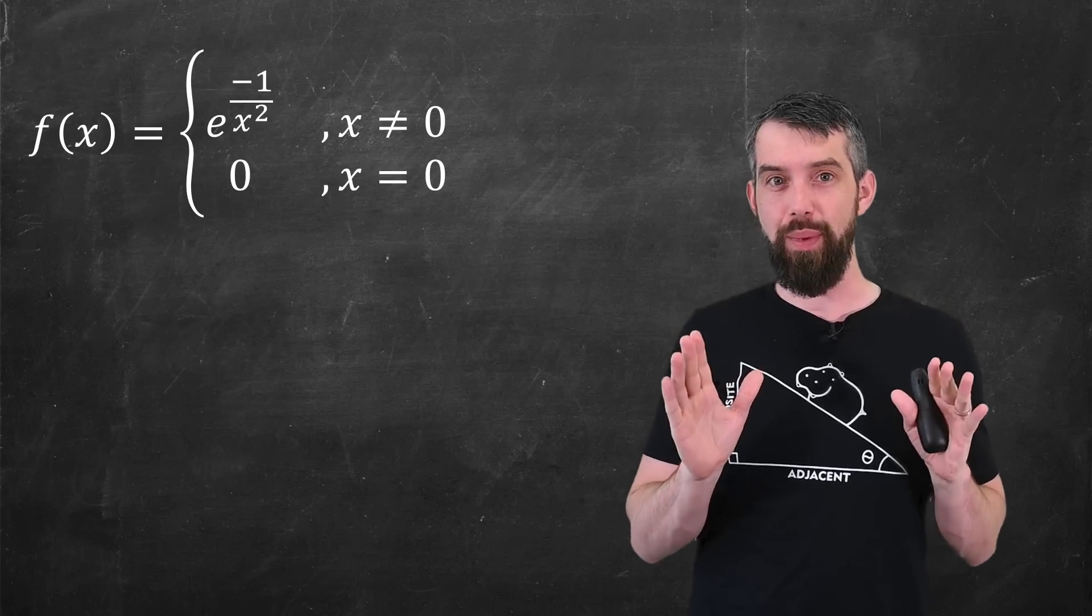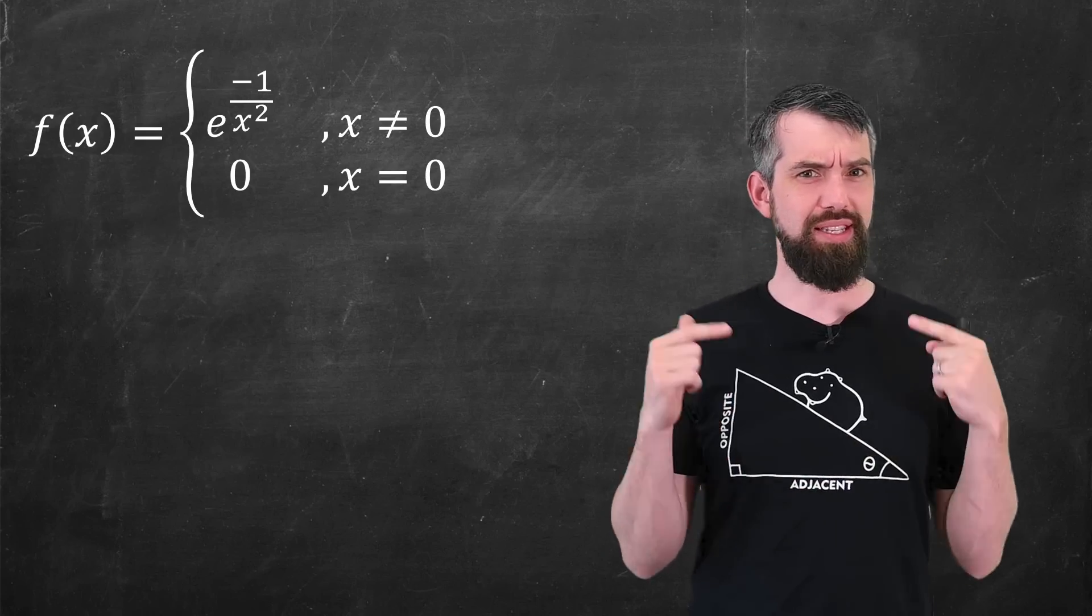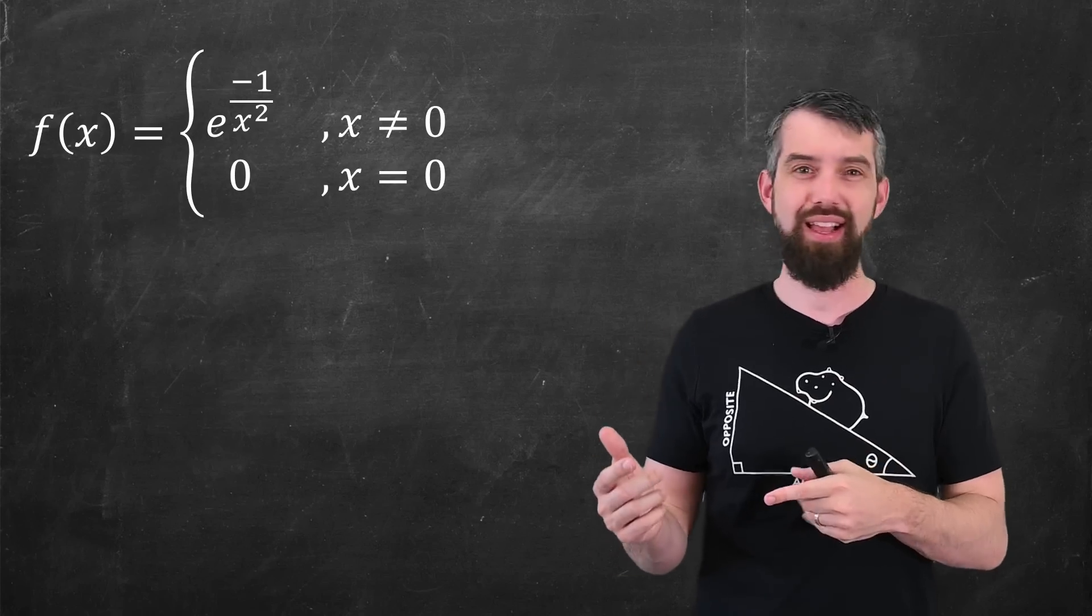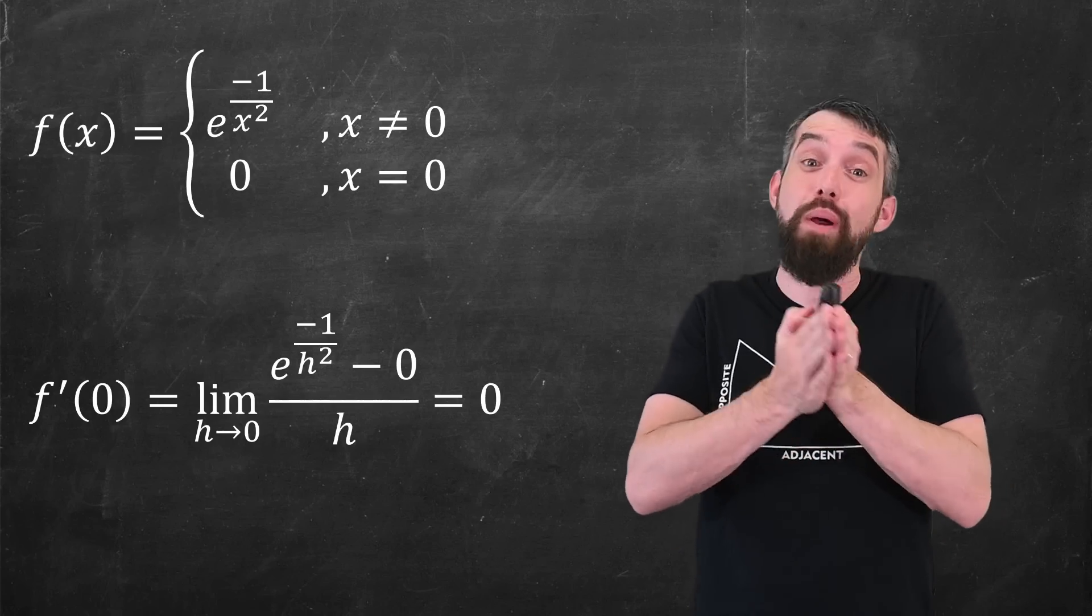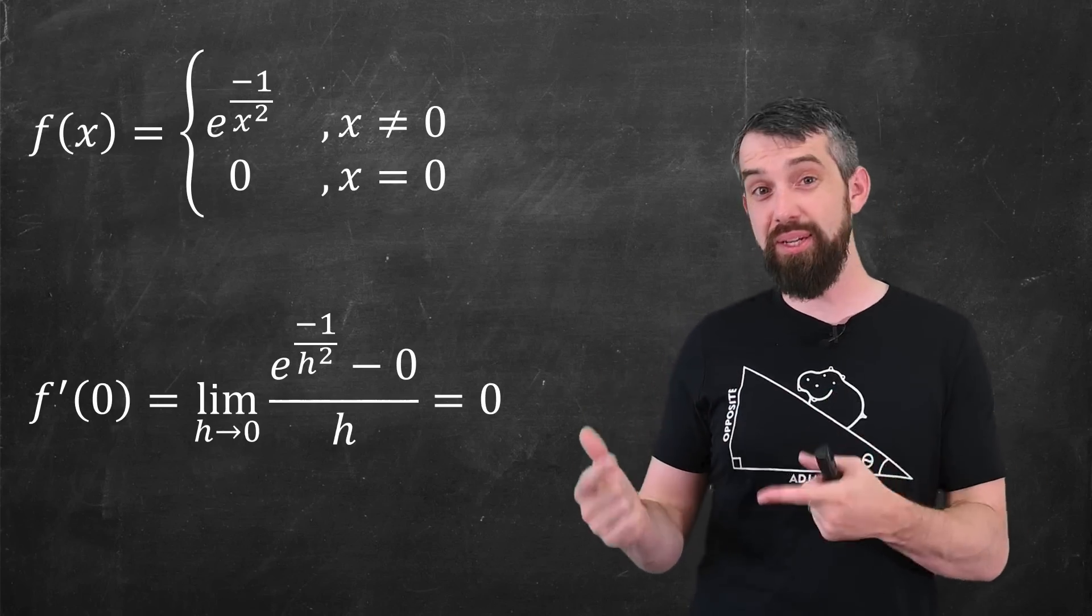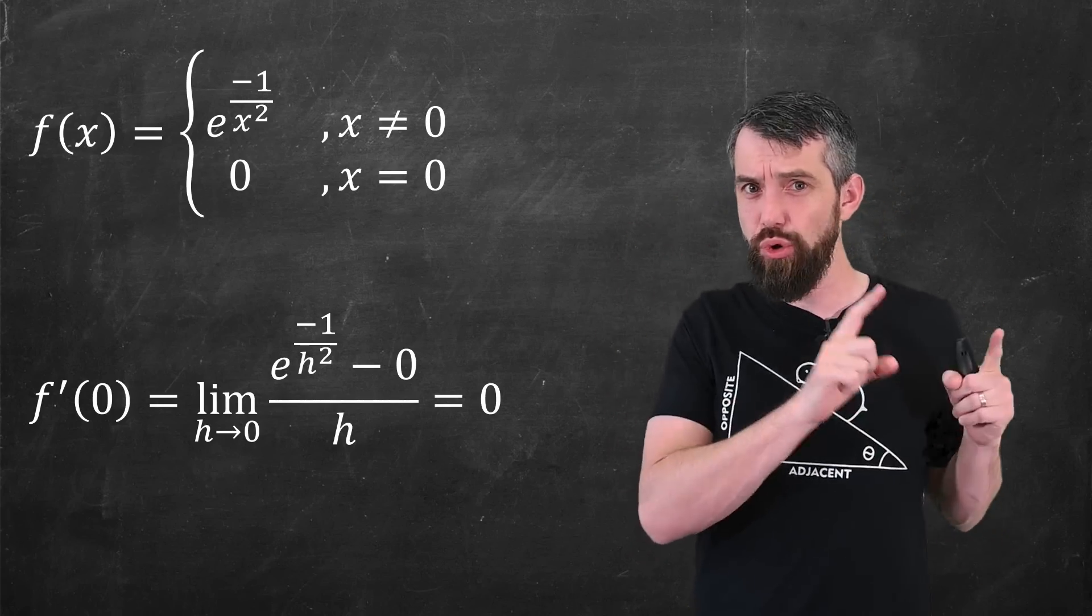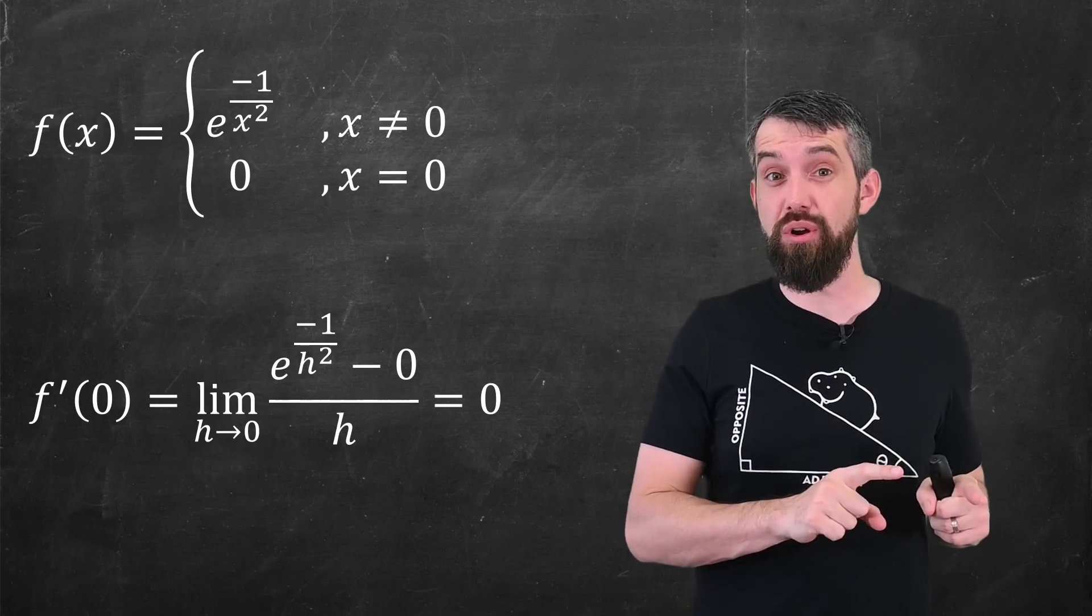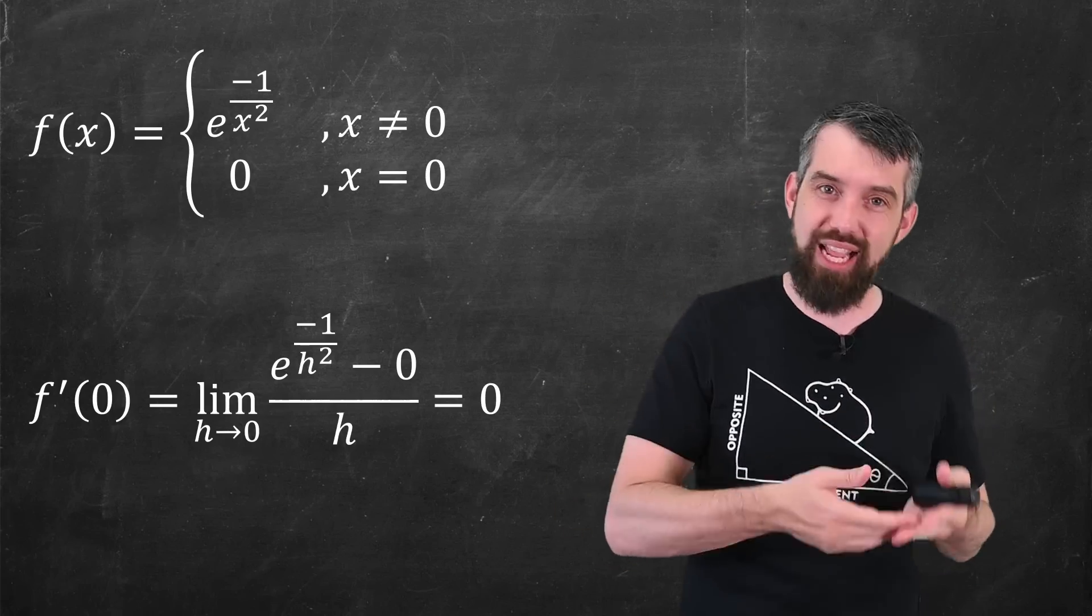This is now, I claim, an infinitely differentiable function. If I use the definition of the derivative, like limit as h goes to 0 of the function at 0 plus h minus f divided out by h, this limit's going to be 0 because of the way that exponentials are going to dominate all polynomials. And so this derivative evaluated at 0 is also equal to 0.